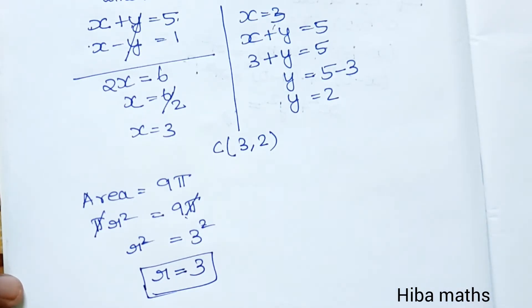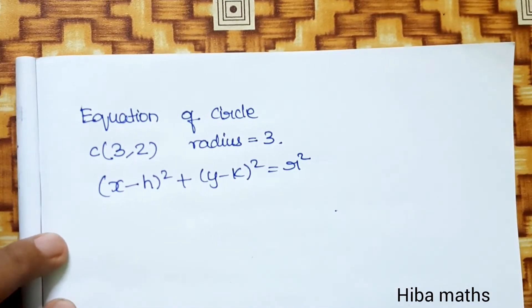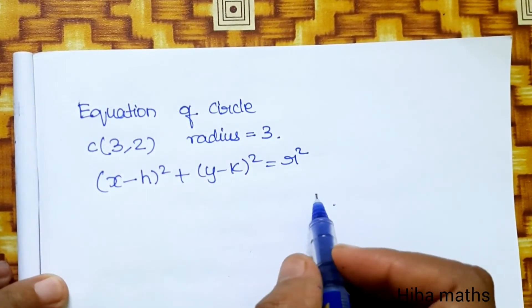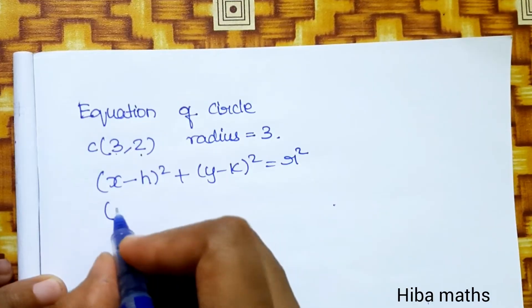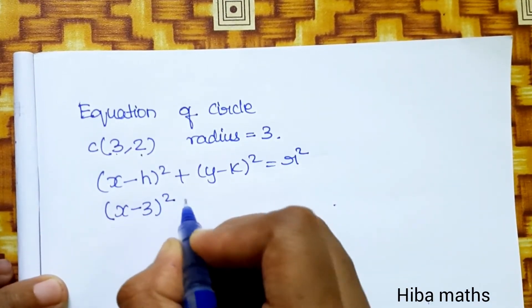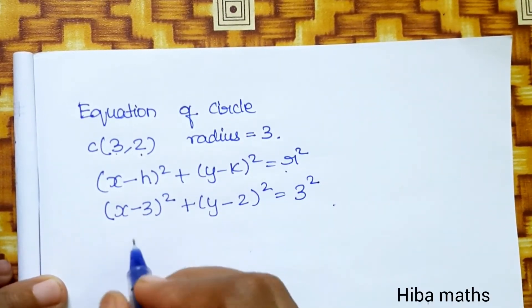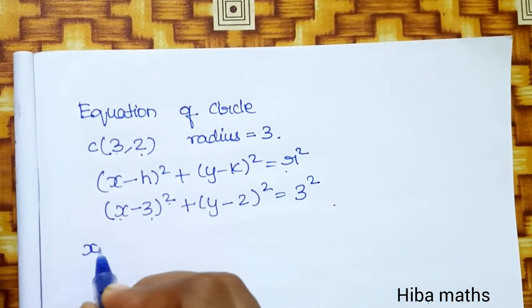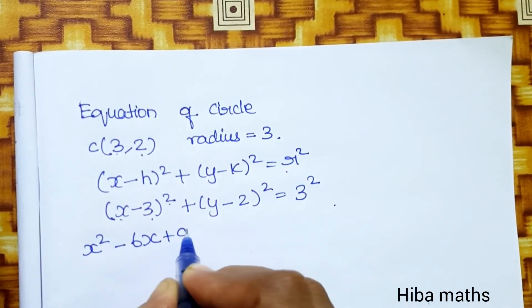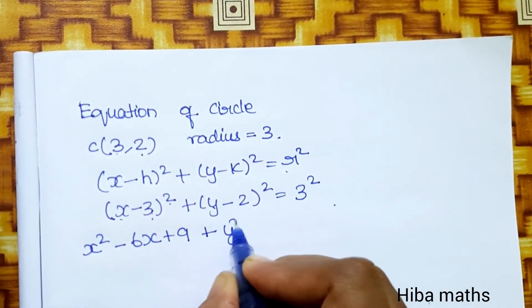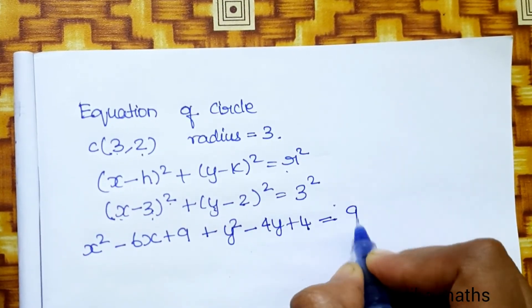Now we can write the equation of the circle with center (3,2) and radius 3. Using the formula (x-h)²+(y-k)²=r², we get (x-3)²+(y-2)²=3². Expanding using (a-b)²=a²-2ab+b²: x²-6x+9+y²-4y+4=9.